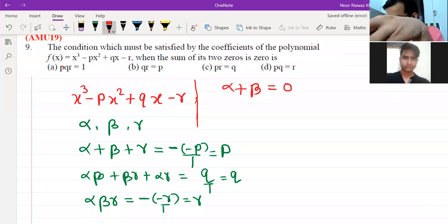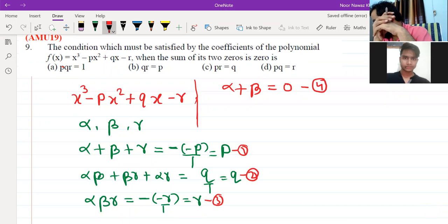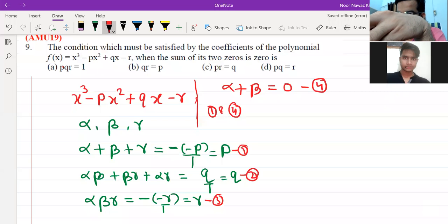We try to make the relation that we can make. I will write here, let's say 1, let's say 2, 3, and 4. If we take 1 and 4, so you have what happened alpha plus beta zero plus gamma.